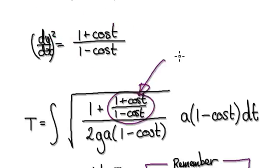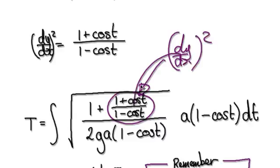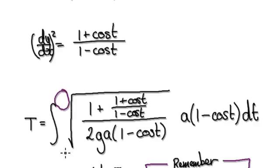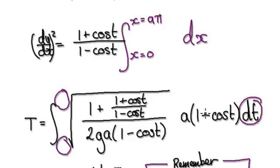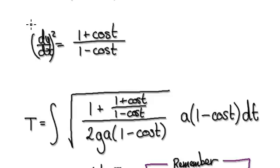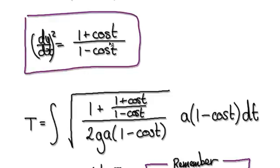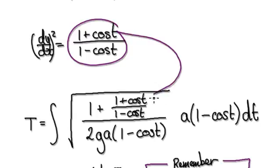This term here is dy by dx squared. We will need to evaluate the limits: earlier we were integrating with respect to x from x equals 0 to x equals a pi, but now we've changed it to dt, so the limits will need to change accordingly. We are currently at this stage, and I will continue in the next video.